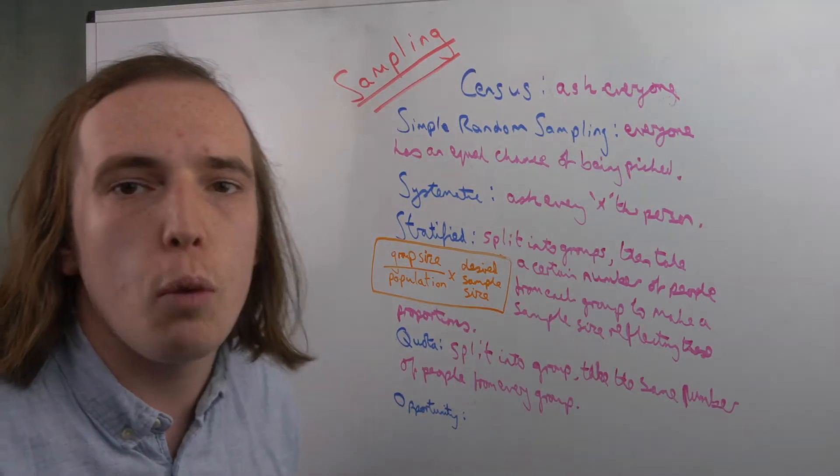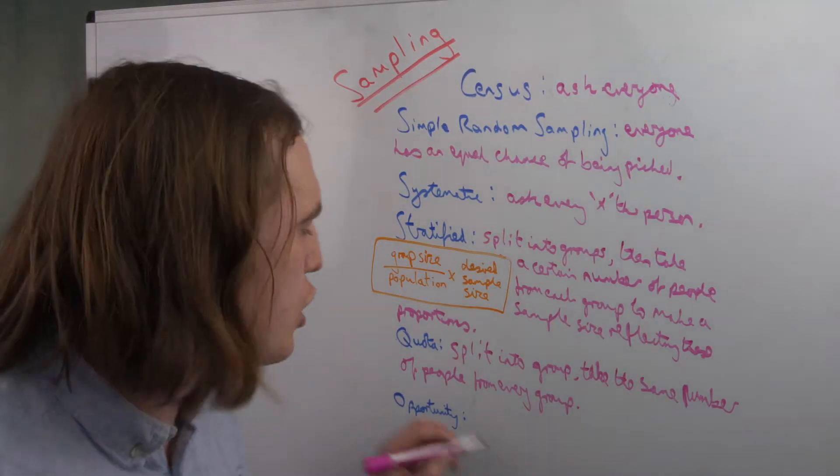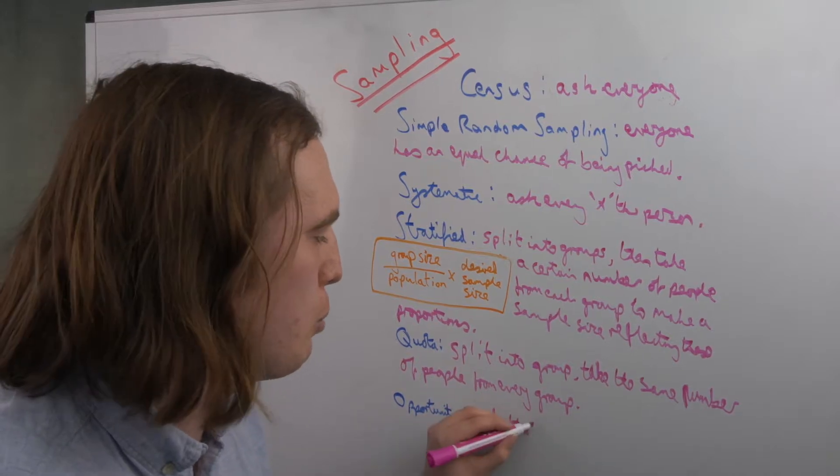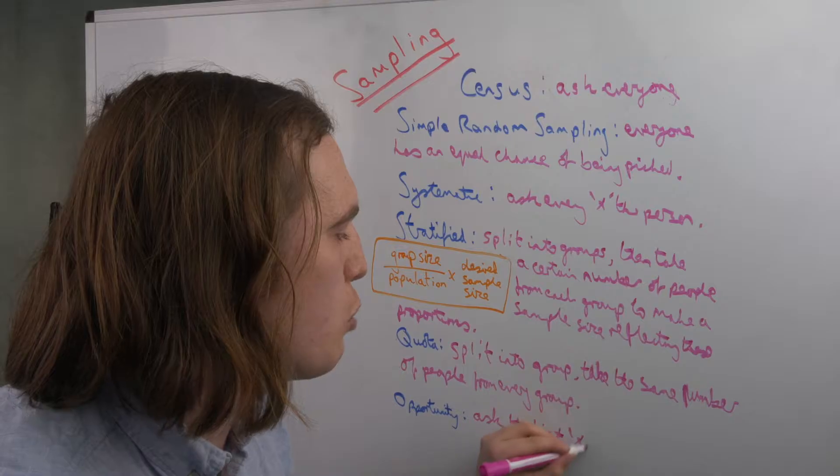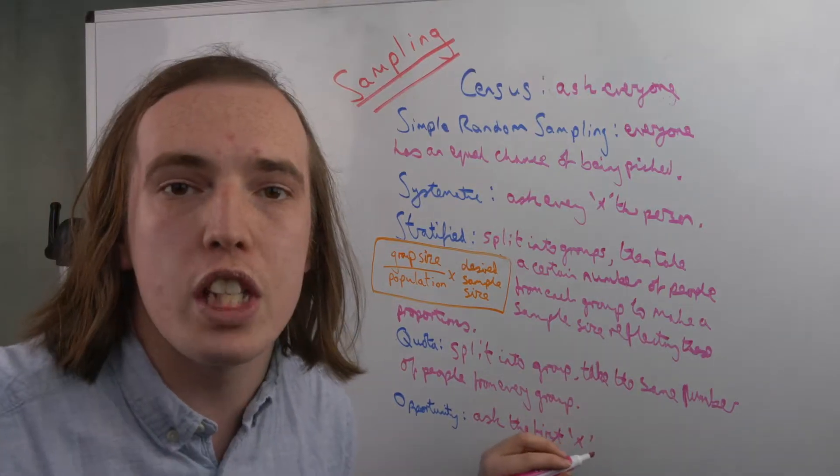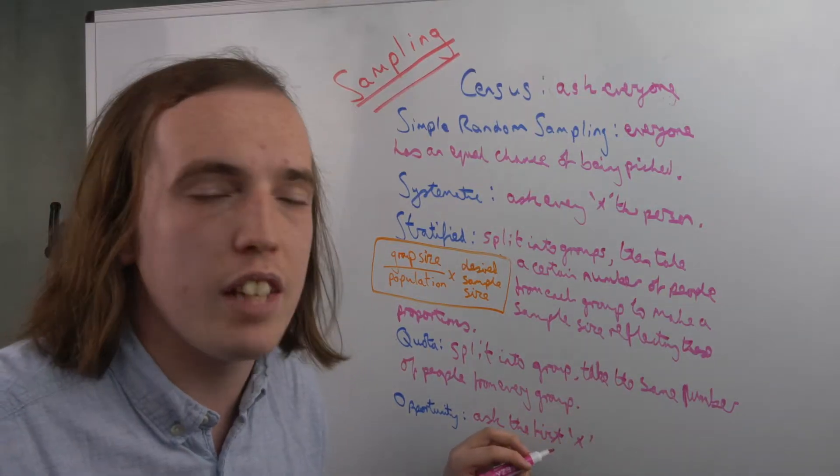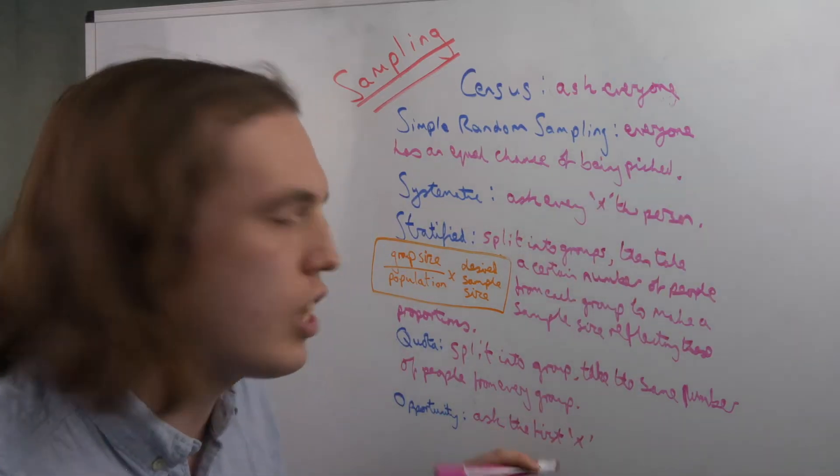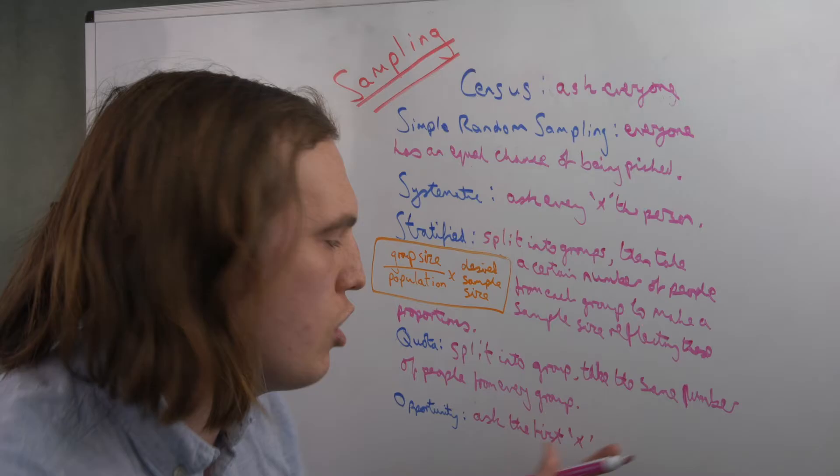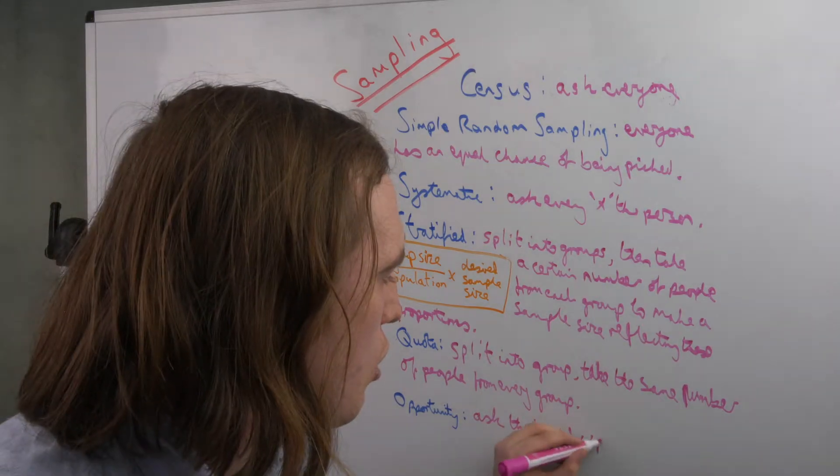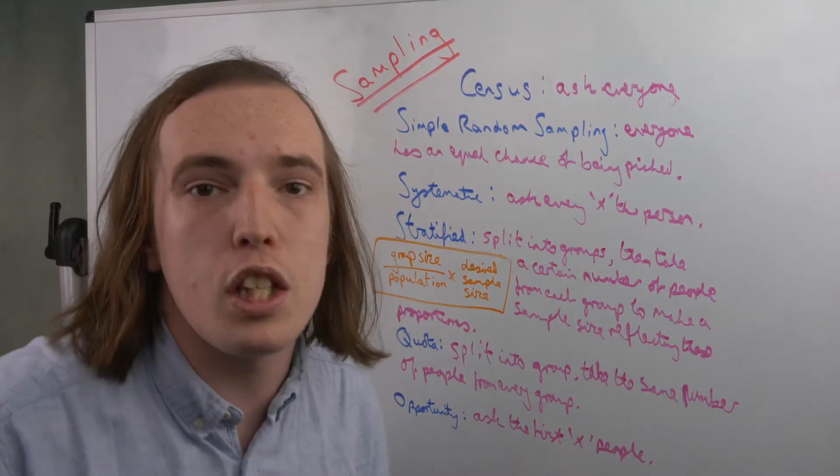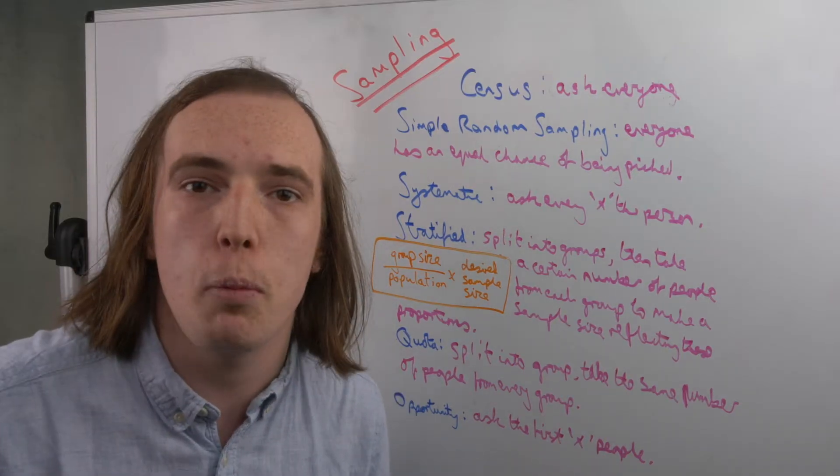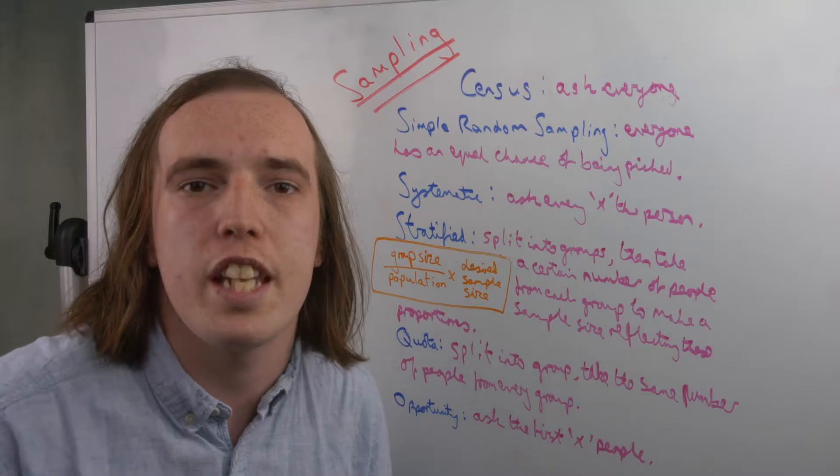Finally then is opportunity. And this is simply where you ask the first X people you come across. So this will be when you see people that are taking surveys in the streets. They're not necessarily counting every fifth person like you would in systematic. You're just saying whoever they can come across, they're going to ask the data from. Ask the first X people. This is going to be quick because it is just—I want to get a sample size of 20 people, I've come across 20 people, I ask then I'm done.